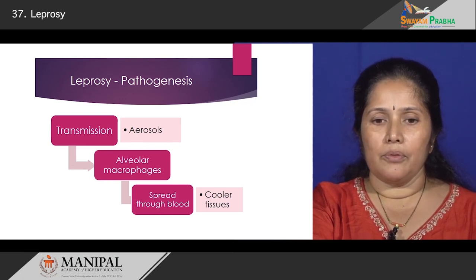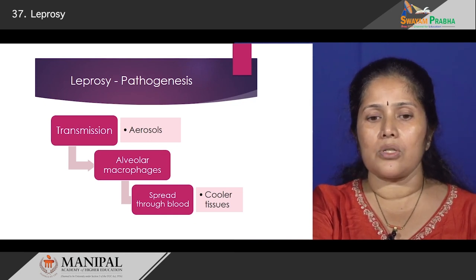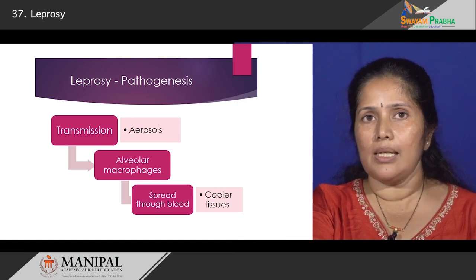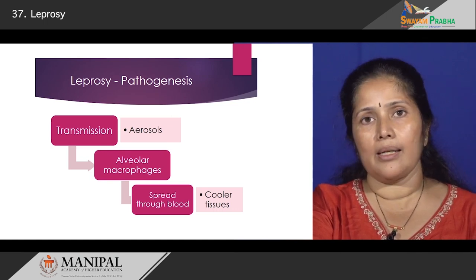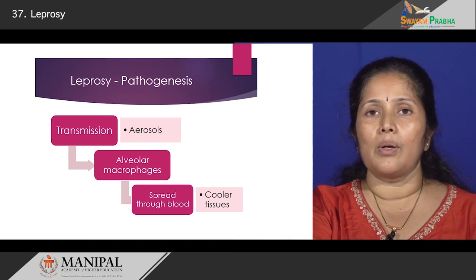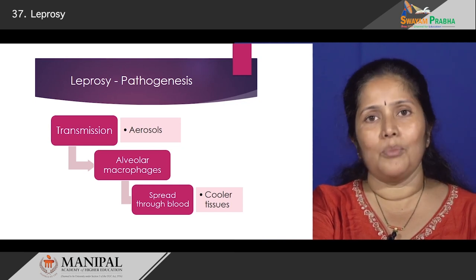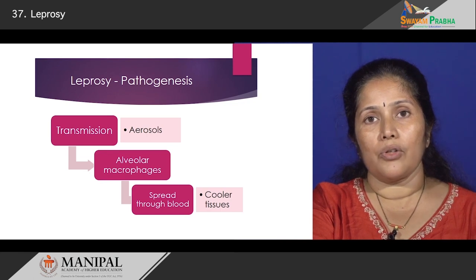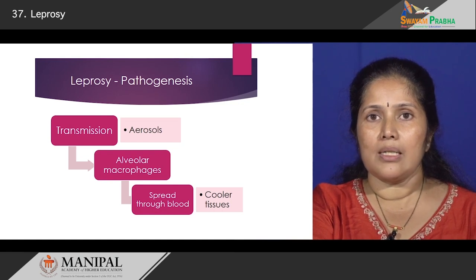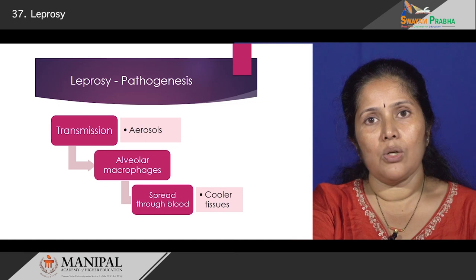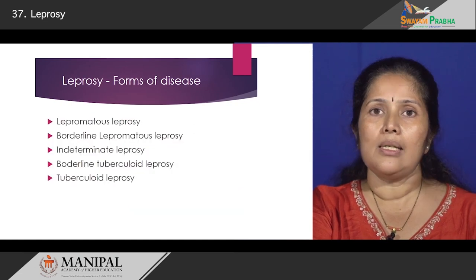In pathogenesis, the way it is transmitted is via aerosols. We inhale the aerosols and from there it goes into the lung alveolar macrophages. From the lung alveolar macrophages these bacilli proliferate and from there they go through the bloodstream into different parts of the body. An interesting thing is these bacilli can proliferate in cooler regions of our body, and that is why it has a predilection for skin and nerves, so patients develop a lot of lesions in relation to the skin and the nerves.